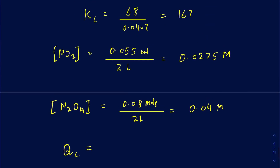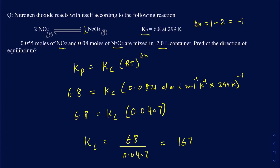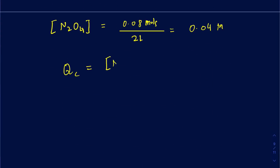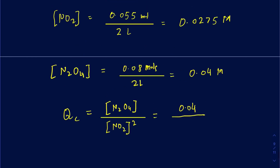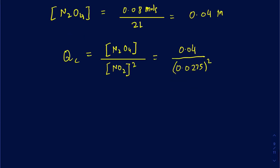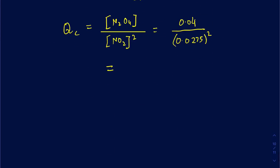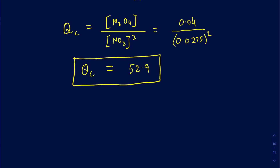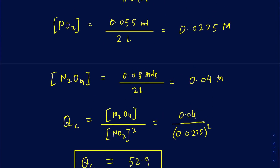The Qc expression still stays the same — products divided by reactants. On the product side I have N2O4, and on the reactant side I have NO2, but remember there are 2 moles of NO2 so I put that as the power. So N2O4 concentration is 0.04, divided by NO2 concentration 0.0275 squared. That comes out to 52.9 as your Qc value.